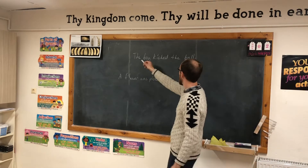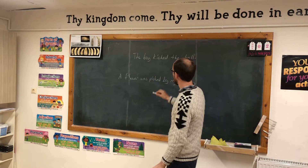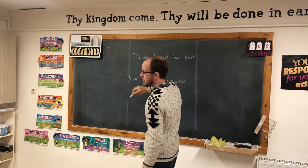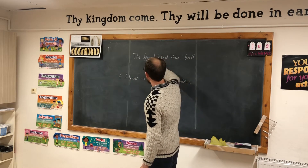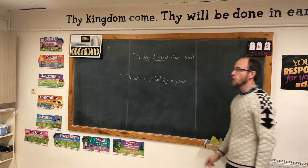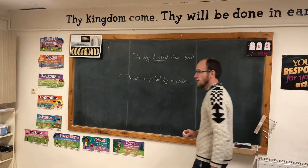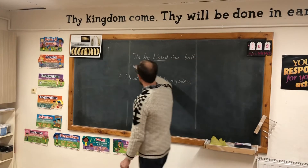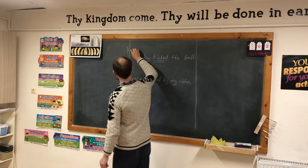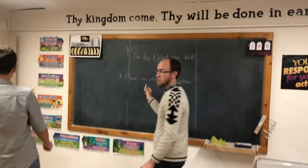Look at this first sentence: 'The boy kicked the ball.' What is the verb? Kick. And what is the subject? Boy. Now, is the boy doing the action or receiving the action? He is doing it. So this is an active voice sentence.